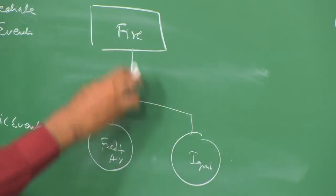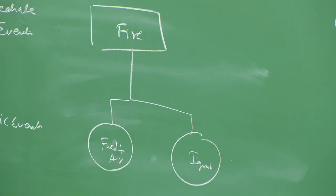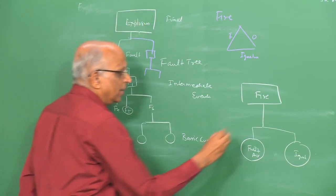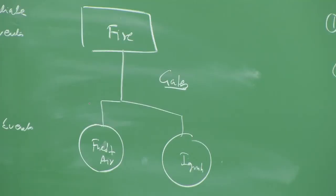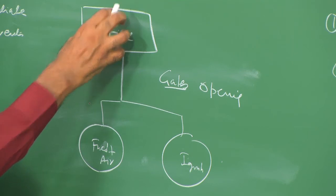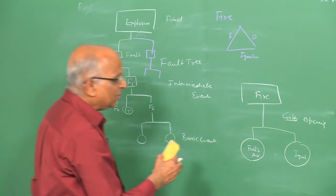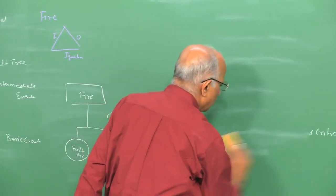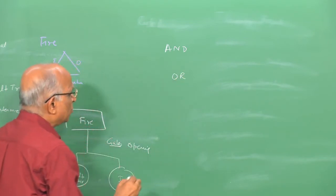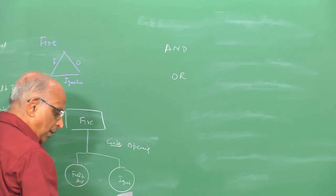How do the basic events relate to the final event? There has to be an opening for them to communicate — these openings are called gates, just as we enter a house through a gate. The basic events are communicated to the next set of events through gates or openings. There are three types of gates possible: an AND gate, an OR gate, and a conditional gate.